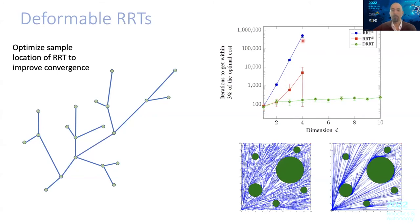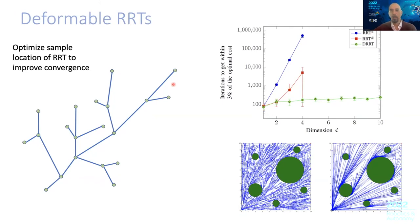If you do that, you deform the RRT and you can get very nice behavior with respect to dimensionality. You have three different versions: RRT*, RRT# which is better, but still does not scale very well as dimensionality increases. However, if you apply this deformable RRT trick, you can actually achieve much better scaling with dimensionality.